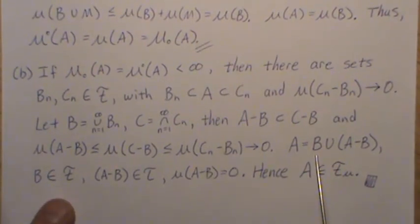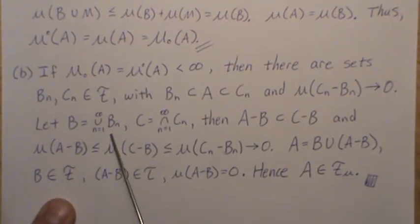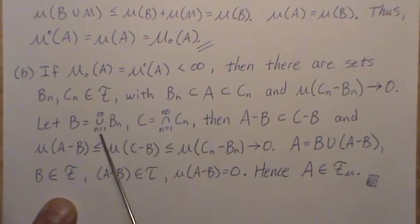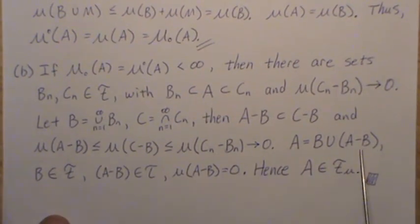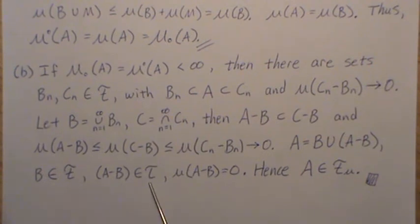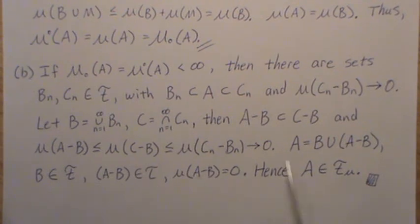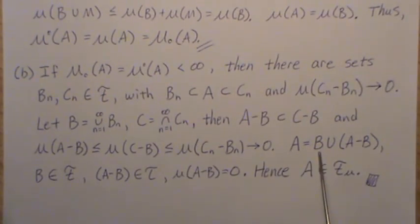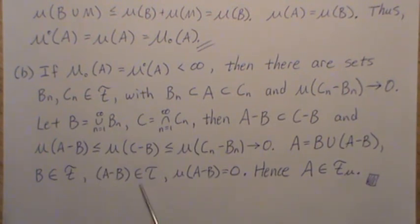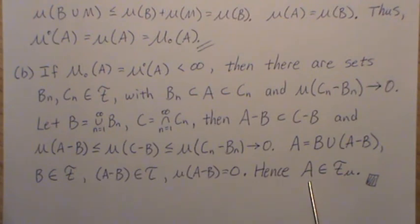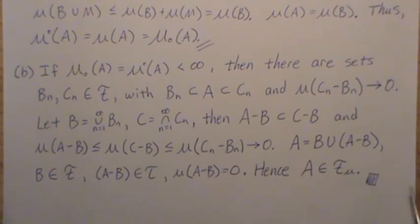So now if we let E equal B union A minus B. Now B is a subset of the sigma field, because it's closed under countable unions. And A minus B is in the sigma field. But we just showed that the measure of A minus B is zero. So that means since A can be represented like this, where B is in the sigma field, and this is of measure zero, then A has to be in the completion of F relative to mu. So that means A is an element of it. And that's what we wanted to show.